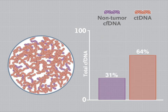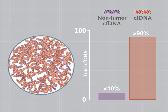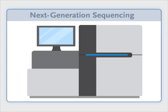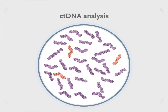to more than 90%. Sensitive detection methods, such as mutation-specific PCR-based techniques and next-generation sequencing, are used for ctDNA analysis to optimize the detection of point mutations in ctDNA, even when the fraction of ctDNA is small.